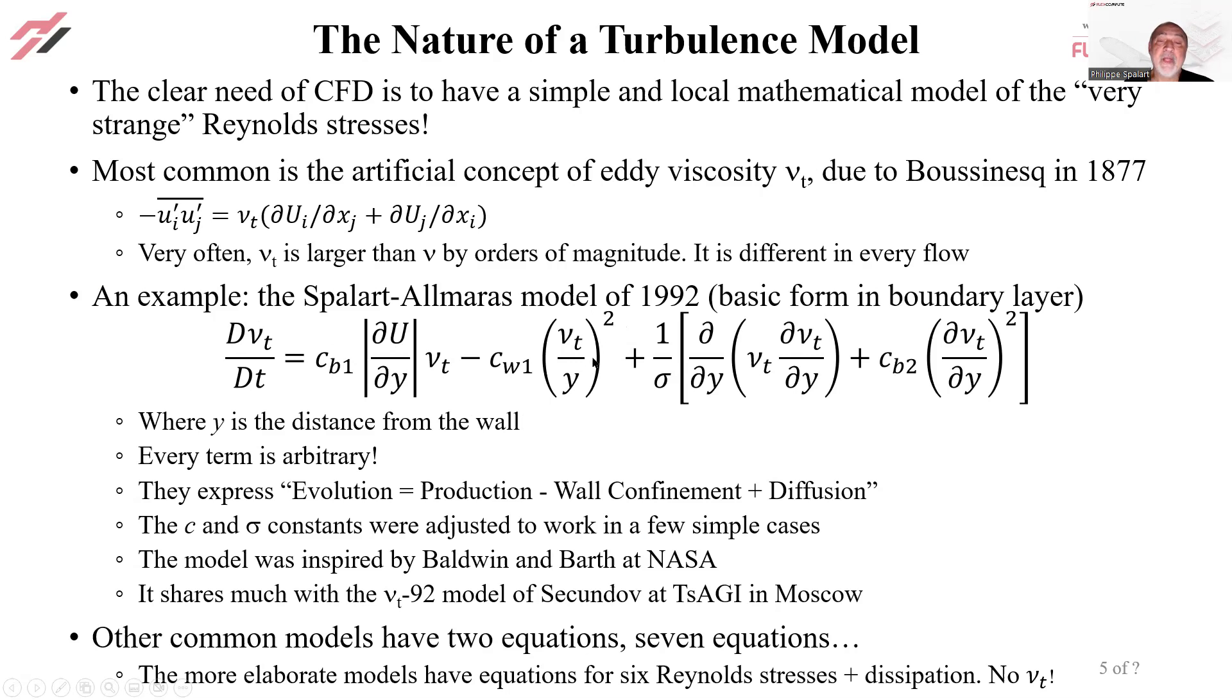Then we have a wall destruction term, or wall confinement term, which represents the fact that eddies that are tumbling along the wall cannot get larger than the distance from the wall. So when y is small, it's going to draw down the eddy viscosity. That's why we have a negative sign.